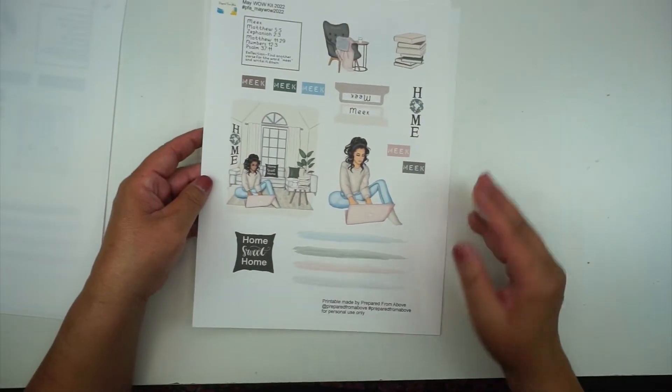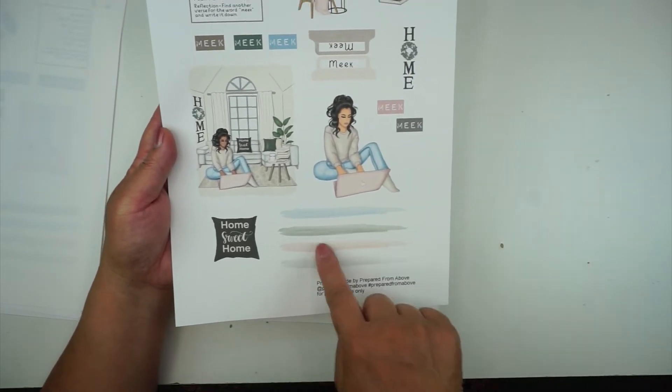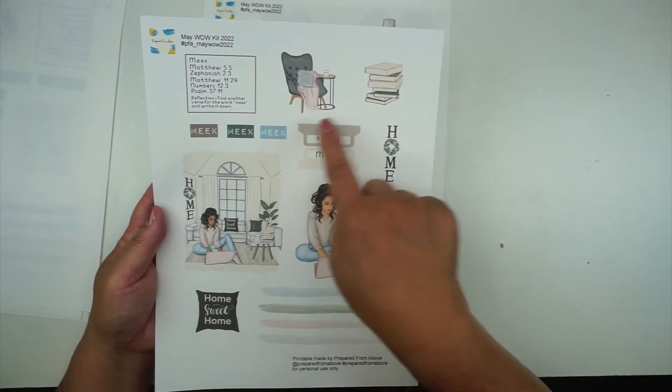This is meek, the little painterly swatches again, you can have the stack of books, little chair.